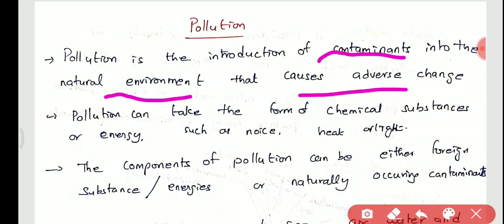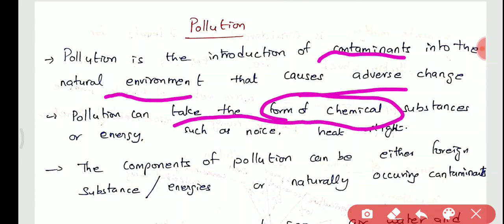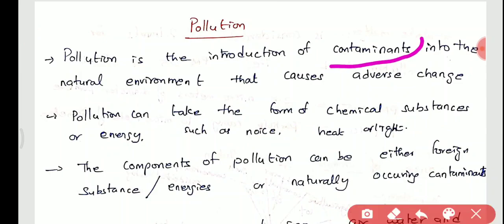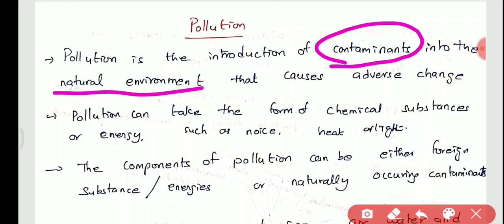Pollution can also be in chemical or energy form — for example, noise, heat, and light. Unnecessary noise, unnecessary heat, and unnecessary light also cause pollution. Similarly, unnecessary elements in the environment cause pollution. The contaminants which change the natural environment are all called pollution, and these contaminants are called pollutants.